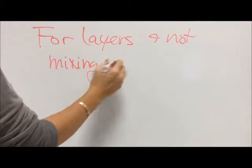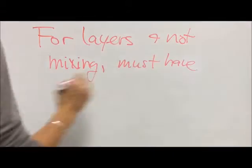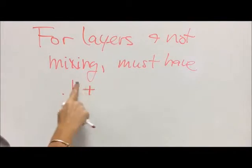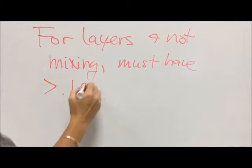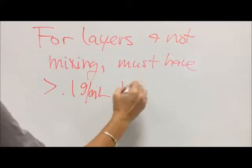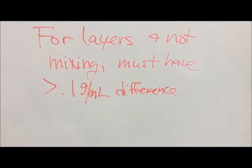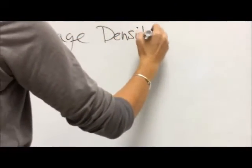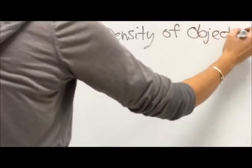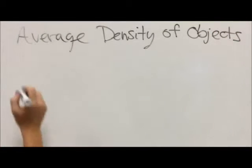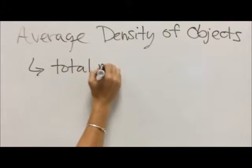For layers and not mixing, the substances have to have somewhere in the neighborhood of a 0.1 gram per milliliter difference. If they're only like a 0.05 away from each other, they're typically just going to mix together. But when we have those thicker and thinner substances, the more and less dense, that greater difference, then the particles tend not to mix together as much.